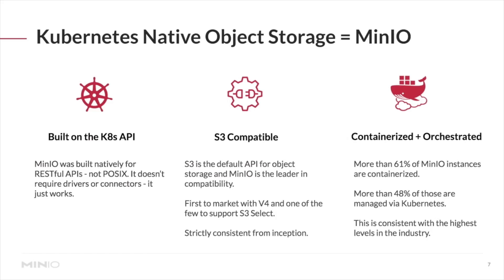Kubernetes has always been cloud-native, and we are the cloud-native choice for many. Before Kubernetes was the choice for enterprises to manage their environments, we started with containers from day one — we were already containerized. We built onto Kubernetes APIs and natively integrate with them. S3 compatibility is in our DNA from day one. If you look at MinIO deployments around the world, more than 60% are containerized, and half of those are run and managed by Kubernetes. That makes MinIO the clear choice when it comes to Kubernetes and cloud-native environments.